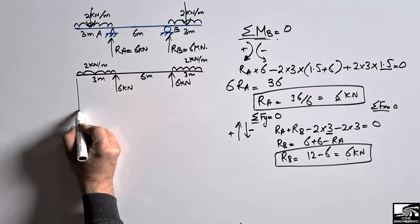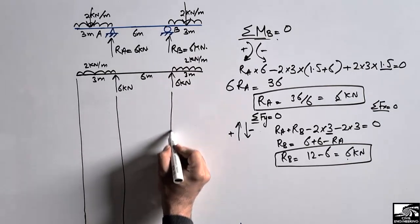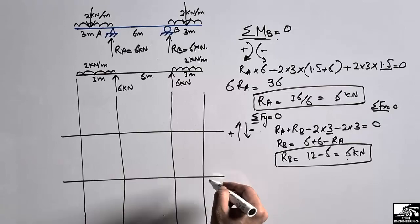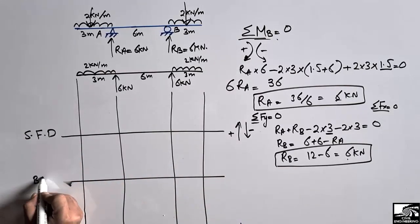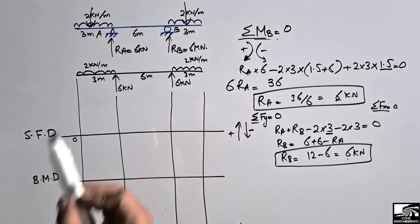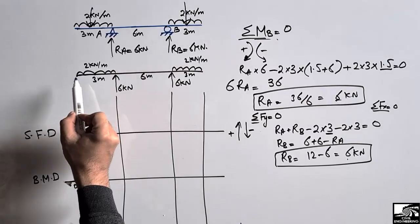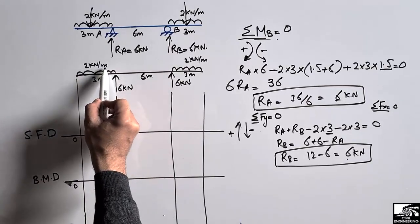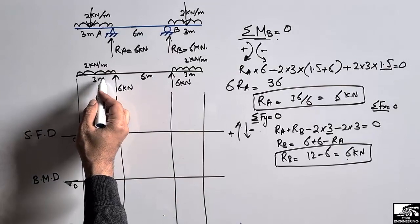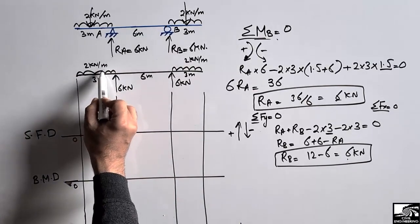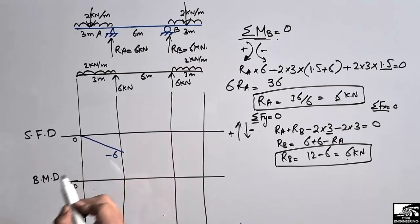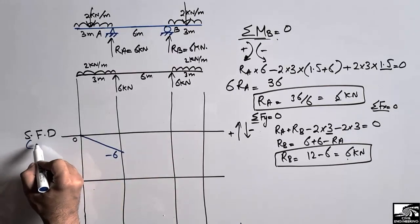First I will draw the reference lines for the shear force and bending moment diagram. This is the reference line for the shear force diagram and this is the reference line for the bending moment diagram. The zero reference line is established. Starting from the left end, the 2 kilonewton per meter load acts downward, so the shear force is drawn in the negative direction. The total load over 3 meters is 2 × 3 = 6, so the shear force drops to minus 6 kilonewtons.